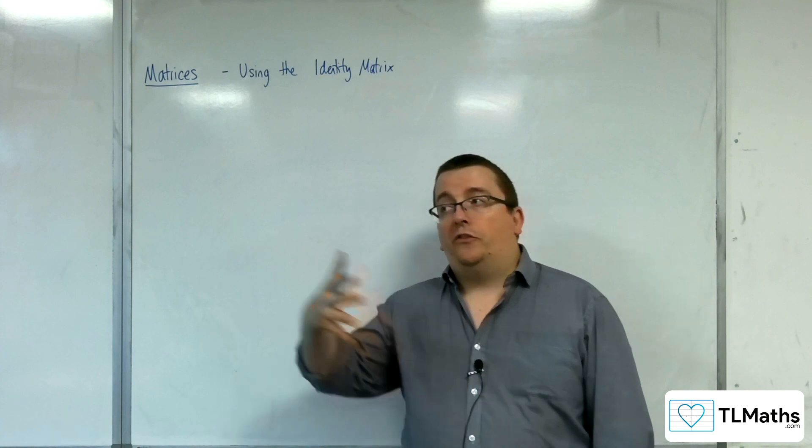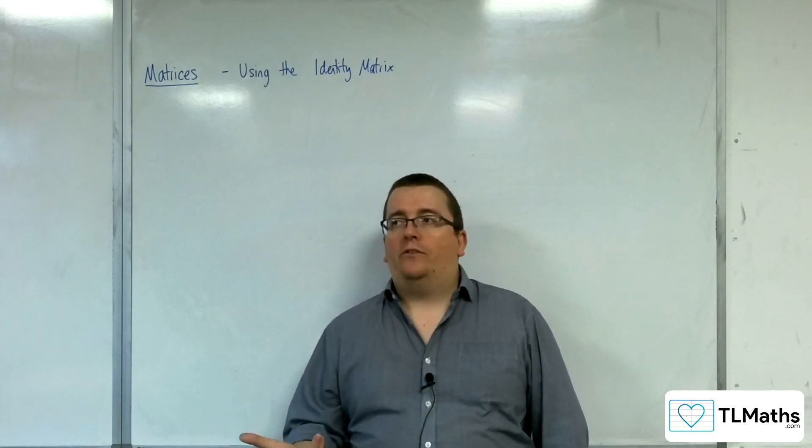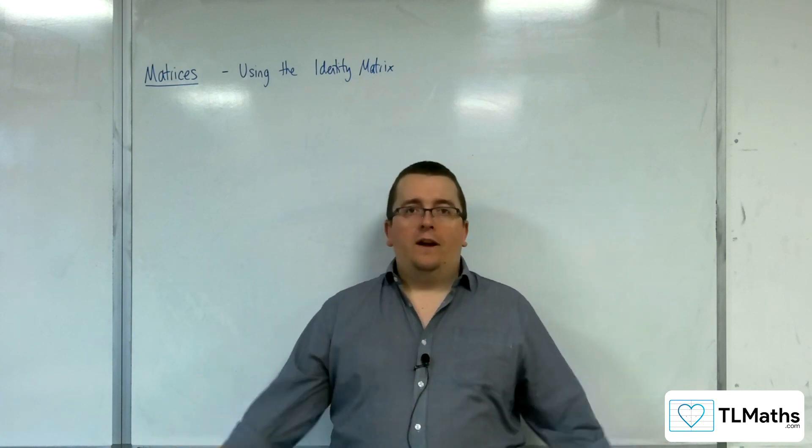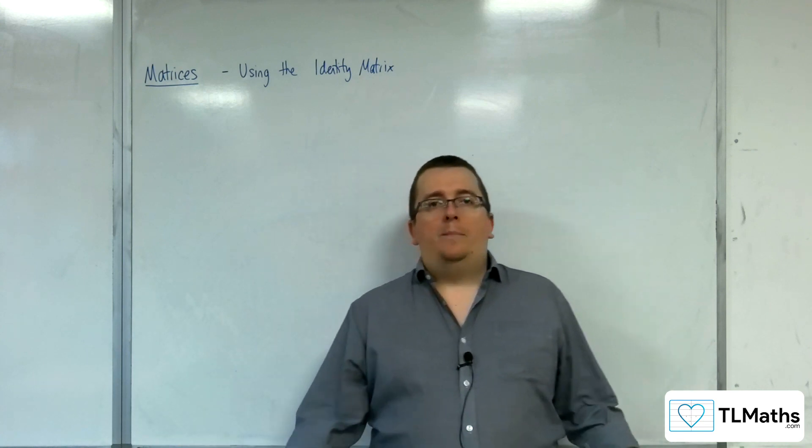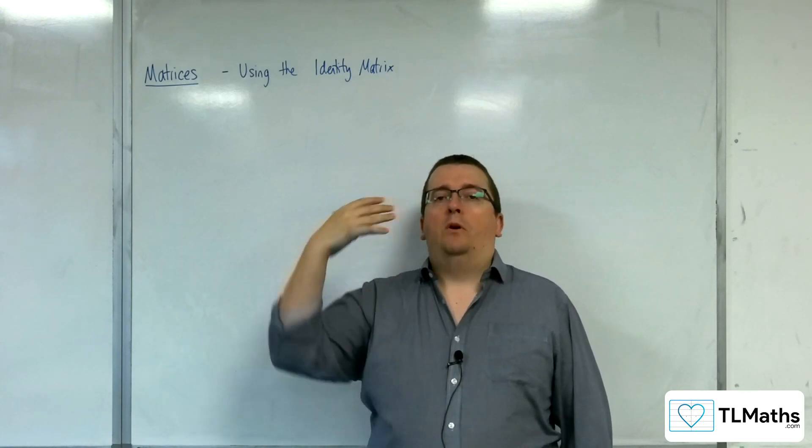I said in the previous video that the zero matrix was effectively an identity matrix for addition and subtraction, whereas the one that we actually call the identity matrix, because we use it a whole lot more, is the one that is an identity under multiplication.